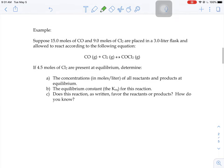It says we're going to take 15 moles of carbon monoxide and 9 moles of chlorine and put them into a 3 liter flask and allow them to react according to that equation that you see there. Then it also tells us there's 4.5 moles of chlorine present at equilibrium. We want to figure out the concentrations and solve for the KEQ.